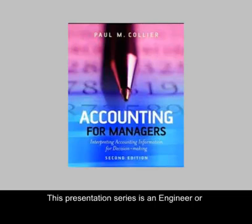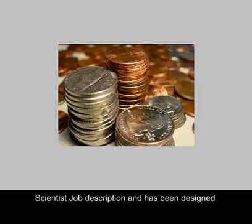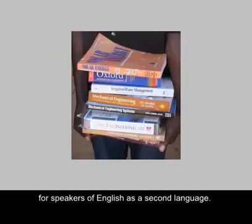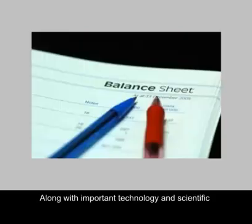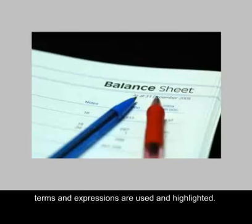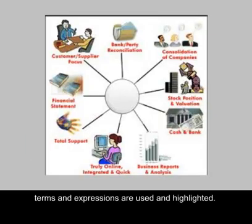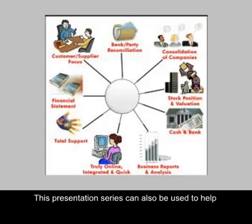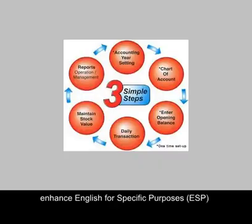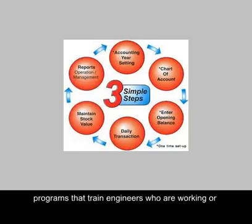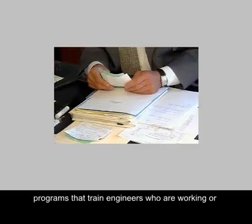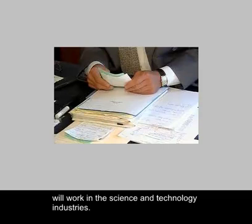This presentation series is an engineer or scientist job description and has been designed for speakers of English as a second language. Along with important technology and scientific concepts, English vocabulary and specialty field terms and expressions are used and highlighted. This presentation series can also be used to help enhance English for specific purposes (ESP) programs that train engineers who are working or will work in the science and technology industries.